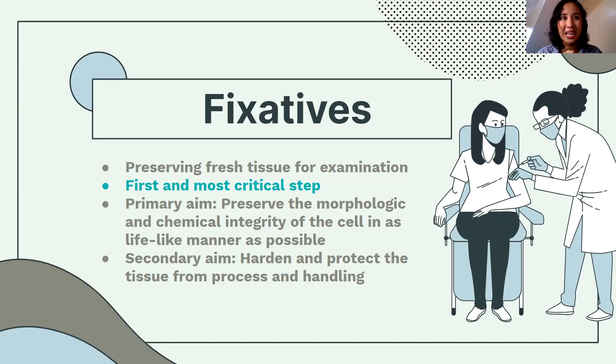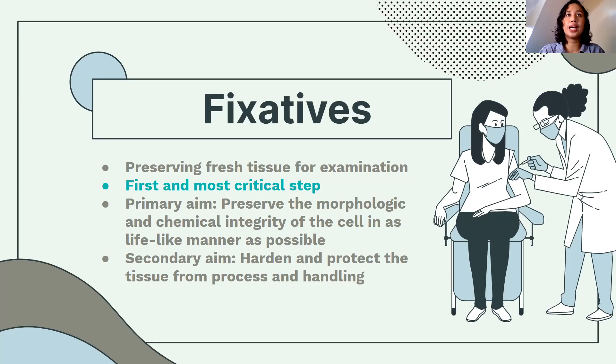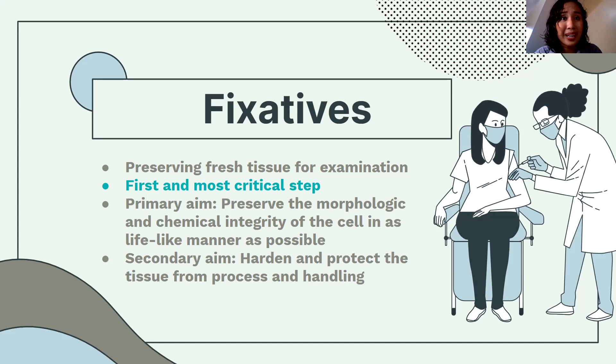The tissue process is a very long process. For the tissue to be cut into thin slices, it will undergo so many processes. Tissues can be distorted throughout the process — they can be subjected to trauma, various reagents, and biochemical reactions. Therefore, the first and most critical step in tissue processing is fixation.